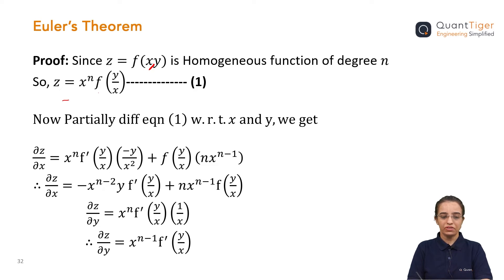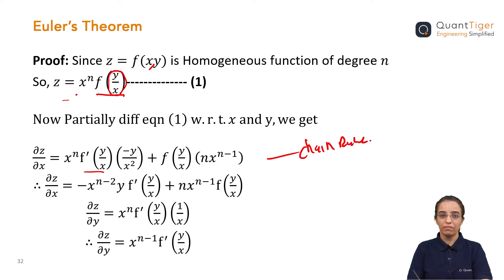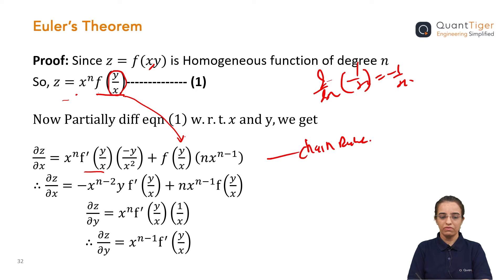Here I am differentiating Equation 1 with respect to x. So, ∂z/∂x — I will apply the chain rule. As per the chain rule, the first function is kept as is, times the differentiation of the second term f'(y/x), and the derivative of (y/x) with respect to x gives −y/x². So the first part is x^n · f'(y/x) · (−y/x²), plus the second term kept as is times differentiation of x^n, which gives n·x^(n−1).